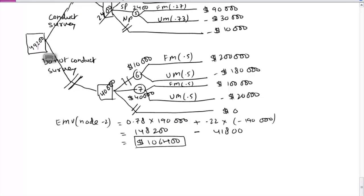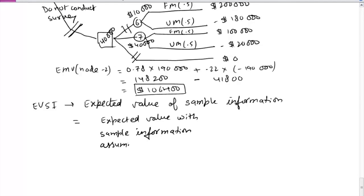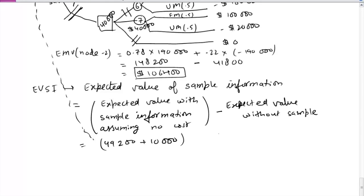We can also do the calculation we did earlier. Expected value of sample information. So this one we got $49,200. This number is coming from here. And we add the $10,000 also, assuming no cost, minus $40,000. So this $40,000 is coming from this number here. So this is the expected value of sample information, $19,200. So obviously paying $10,000 is cheaper. So it's easy to make a decision whether or not to conduct a survey.